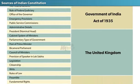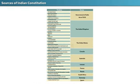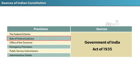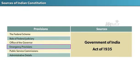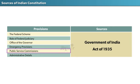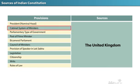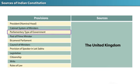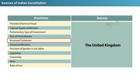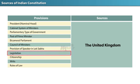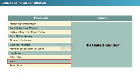The sources from which we got the various features of the Indian Constitution are tabulated on screen. The Government of India Act of 1935 gave us: the Federal Scheme, Rule of Federal Judiciary, Office of the Governor, Emergency Provisions, Public Service Commissions, and Administrative Details. The Constitution of the United Kingdom gave us: the Post of President, Cabinet System of Ministers, Parliamentary Type of Government, Post of Prime Minister, Bicameral Parliament, Council of Ministers, Provision of Speaker in Lok Sabha, Legislation, Citizenship, Writs, and Rule of Law.